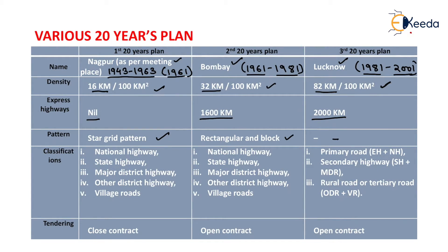The Nagpur road plan classified roads into various types: national highway, state highway, major district road, other district road, and village road. National highways are the highways which traverse several provinces or states and are of national importance for strategic, administrative, and other purposes.